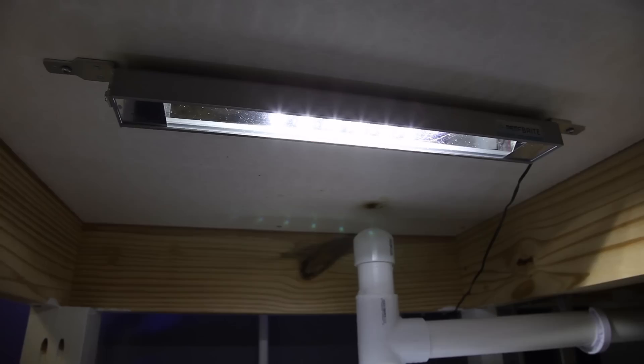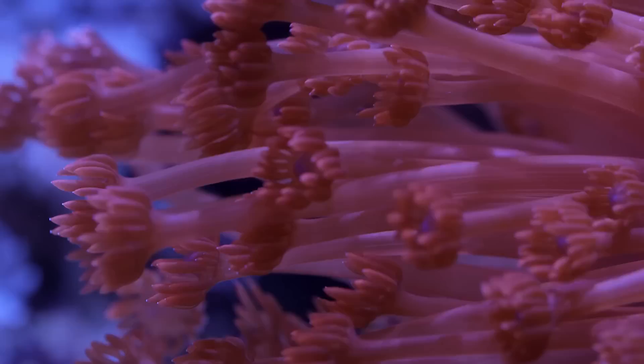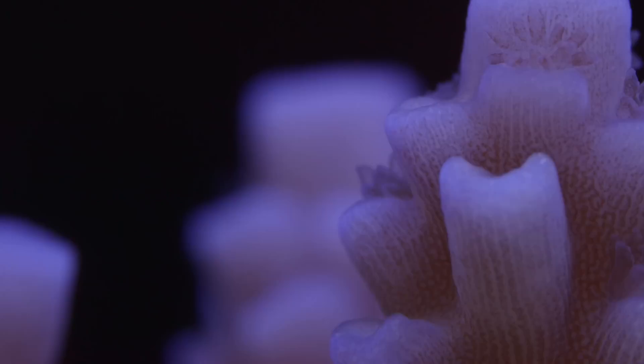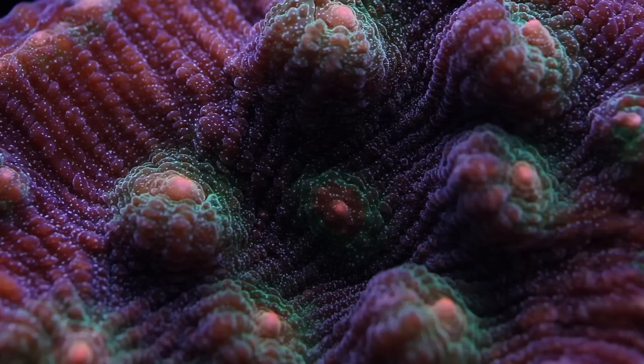For as long as I can remember, there is always a really hot coral that the coral people just go completely bananas over. Sometimes it is Acropora, sometimes it is Zoanthids, then it moves onto Acans, and lately it has been Chalices.